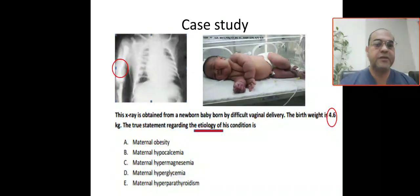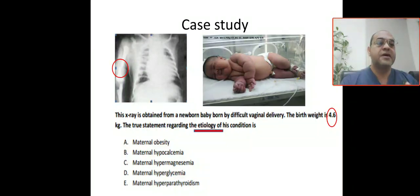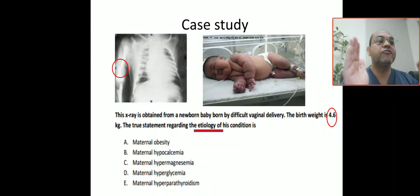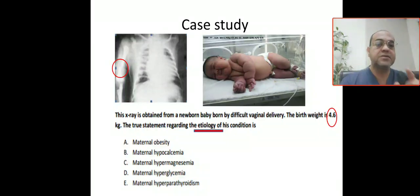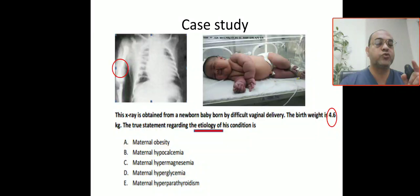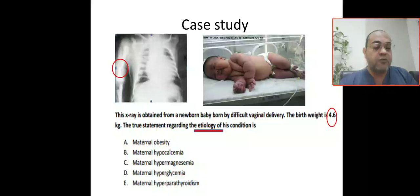Bismillah Rahman Rahim. Our case scenario today is an X-ray obtained from a newborn baby born after a difficult vaginal delivery. Keep in mind: difficult vaginal delivery is the first clue of the quiz. The birth weight is 4.6 kg — that is the second clue. The baby is a large for gestational age baby, more than 4 kg or more than the 90th centile. So what is the true statement about the etiology of this condition?